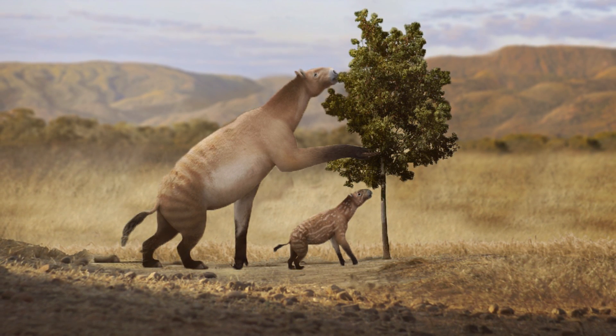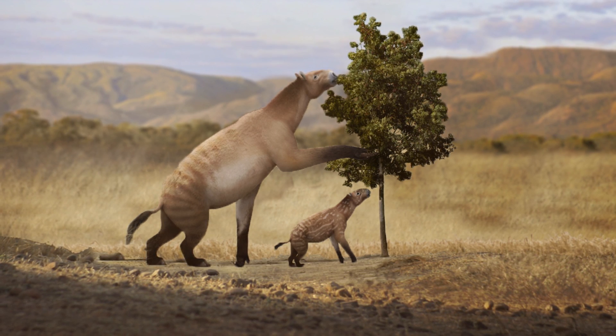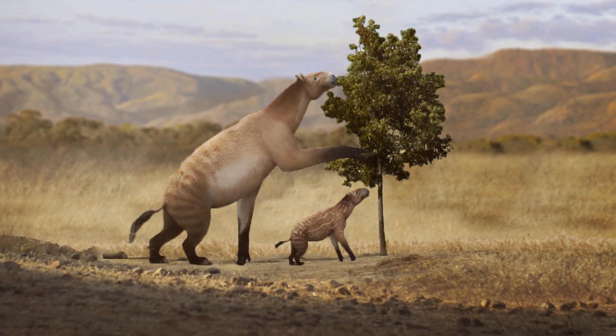And they even had specialized neck vertebrae that allowed them to look up more easily than like a horse or rhino. So by about 40 million years ago, Chalicotheres had arrived at a single, pretty successful body plan, optimized for high browsing. But then things started to get weird.